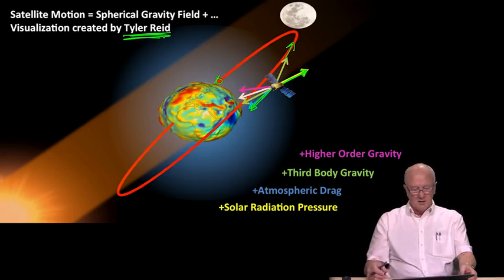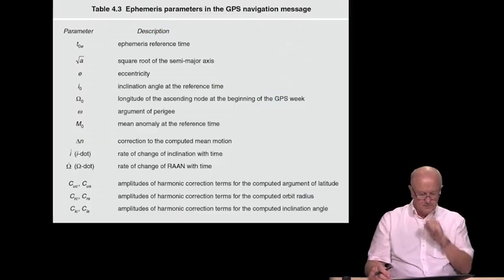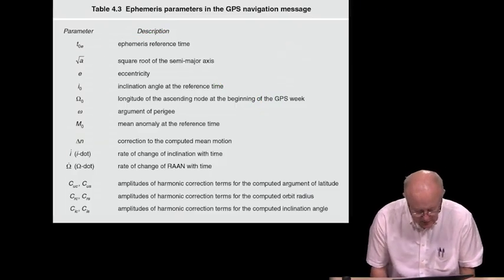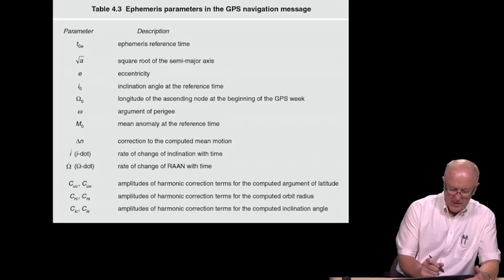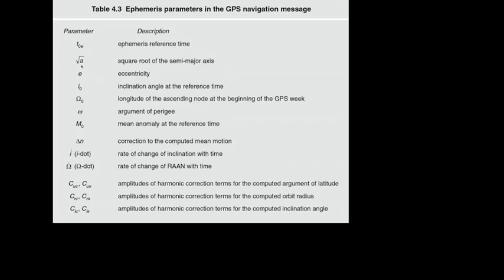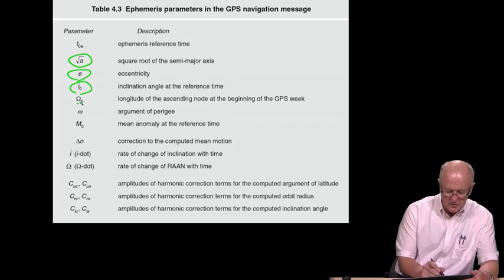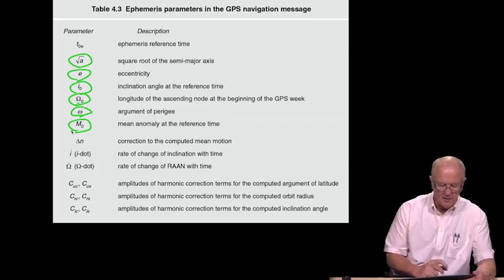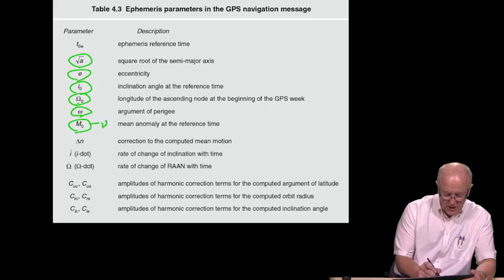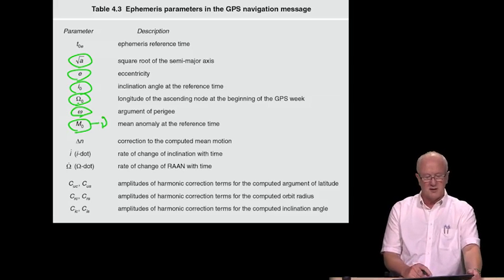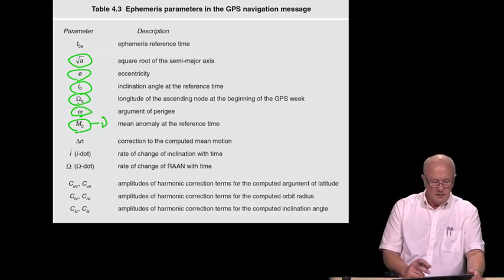The impact of all this is that when you look at the ephemeris parameters in the GPS nav message, you find the ones that you expect: semi-major axis, eccentricity, inclination, longitude of the ascending node, argument of perigee, mean anomaly, all these things that we've talked about. We know that we have to process this to get the true anomaly, but we've talked about how to do that.